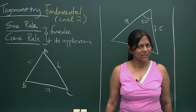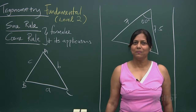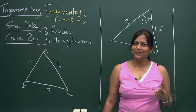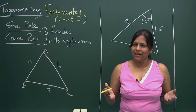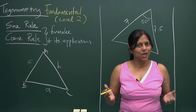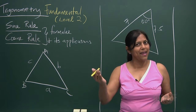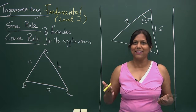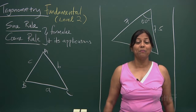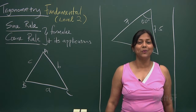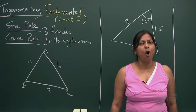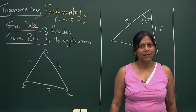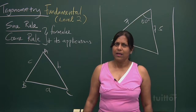Comfortable with the sine rule? It's very easy — sine A over a, sine B over b, sine C over c. Now I'm going to move on to cosine rule.